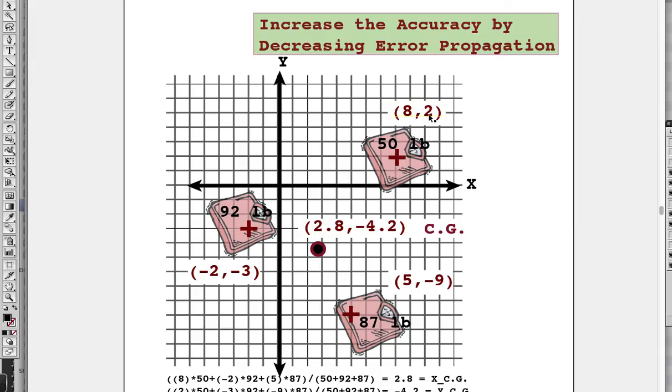Certainly the weight itself does not have an exact value. This might be 50 plus or minus 2 pounds. So there's uncertainty in all these measurements that went into this calculation. The way we could report the uncertainty in our 2.8 for the X CG would be to add the relative uncertainty in the X coordinate.